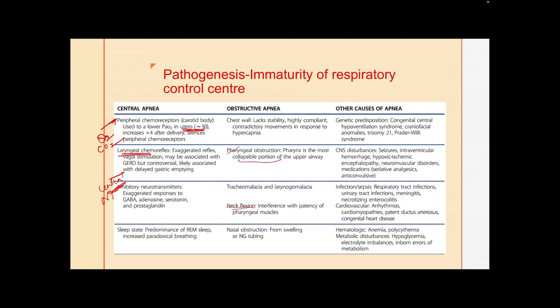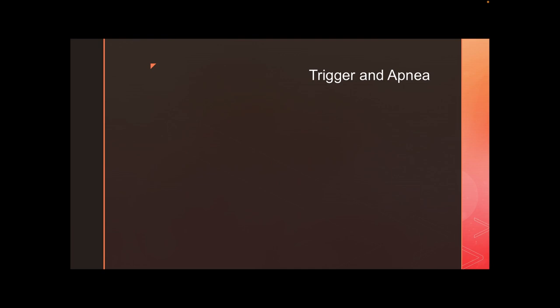Laryngeal chemoreflex and vagal stimulation — from excessive suctioning or reflux — can also result in apnea. This is a protective mechanism against aspiration, but it can be exaggerated in preterm infants. Additionally, apneas are more common during active sleep when respirations are irregular. Preterm infants have a predominance of REM sleep, resulting in increased paradoxical and irregular breathing, leading to apnea.